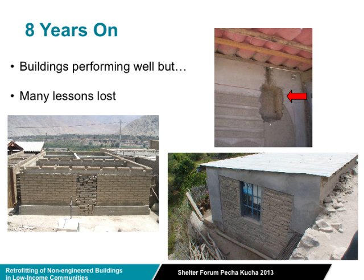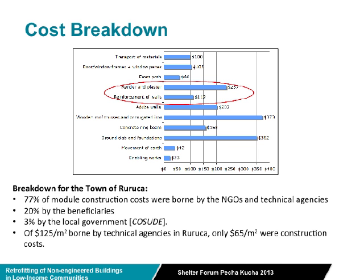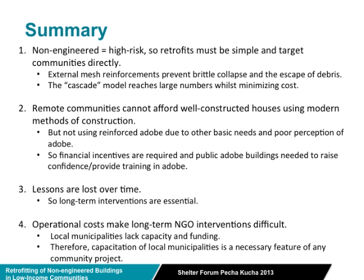The problem coming back eight years later is that those initial houses were built very well, but many of the lessons have not been applied in later constructions. The actual cost of the retrofitting in reconstruction is quite small — materials are a small portion of the construction cost — but relative to the incomes of those communities it's still a significant amount, showing that some kind of incentivization is also required.